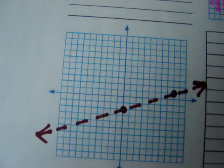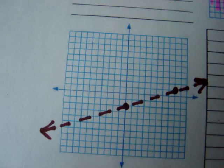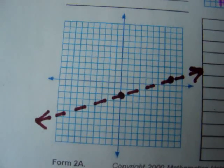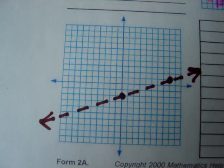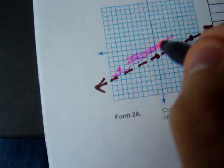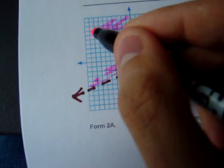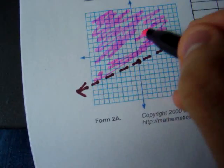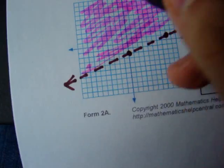I have to shade in all the values that are greater than 3/8x minus 2. Since this is a y is greater than, all the y values must be greater than the line. Where are the y values greater than? Well, greater than is more, so it's all the values above or higher than the line. All of these values are greater than y, so I shade them in.